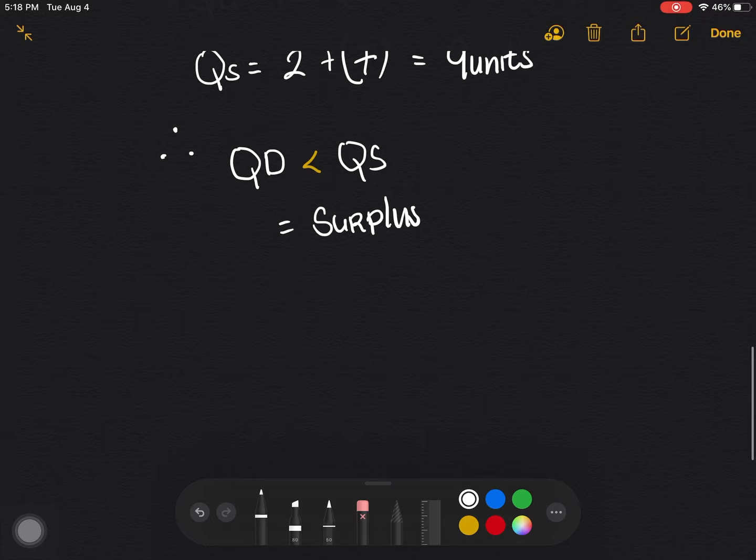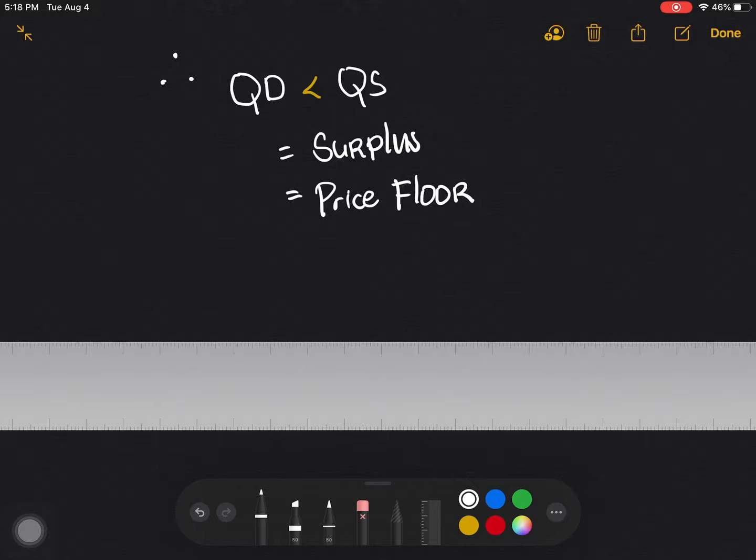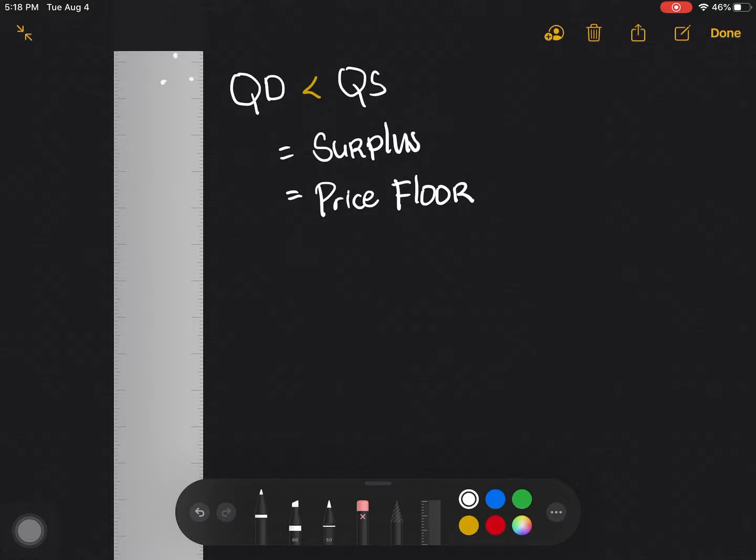And surplus is only applicable for price floor. To illustrate this, let's try to use again our ruler. So let me just fix this.